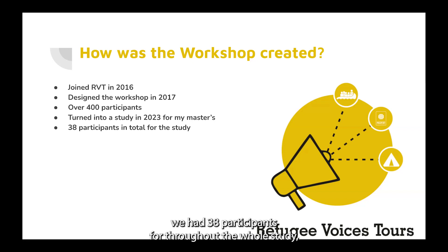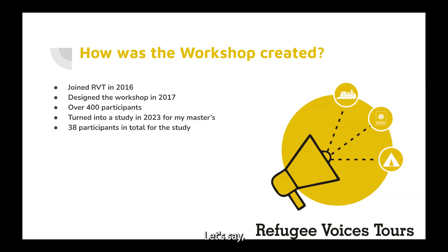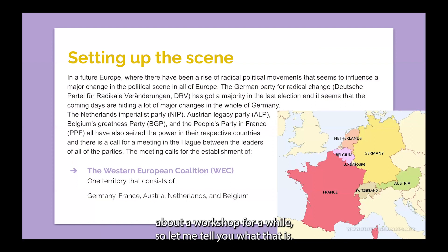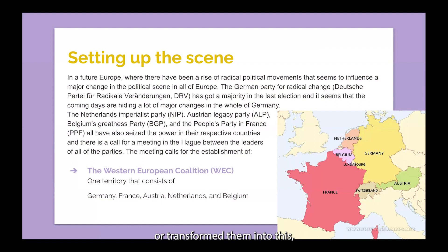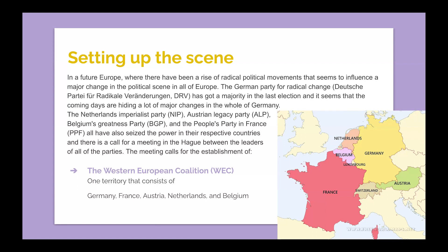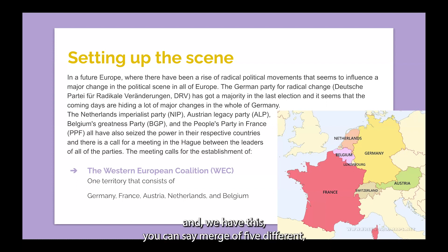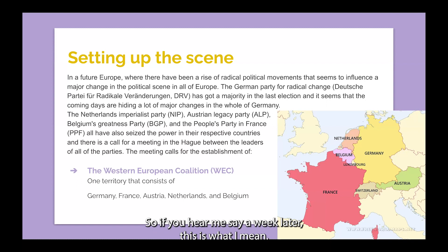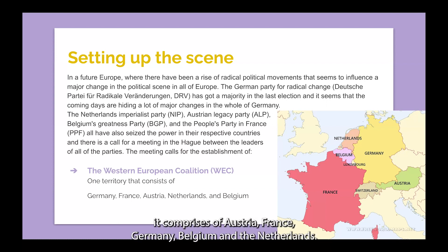We had 38 participants throughout the whole study — we weren't that lucky to attract that many people to join the study. So the workshop: I try to transport people into a hypothetical future Europe where we're having a rise of radical parties. We have a merger of five different major countries within Europe, which we call the Western European Coalition — WEC. It comprises Austria, France, Germany, Belgium, and the Netherlands.